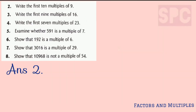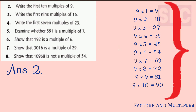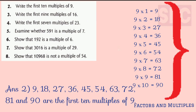Question number 2: write the first 10 multiples of 9. You have to write the table of 9 up to 10 times, and whatever you get on the right-hand side of the equals sign are the multiples. So: 9, 18, 27, 36, 45, 54, 63, 72, 81, and 90 — these are the first 10 multiples of 9.